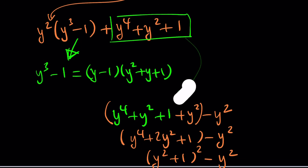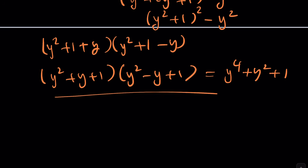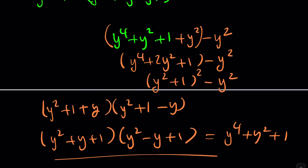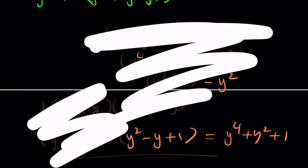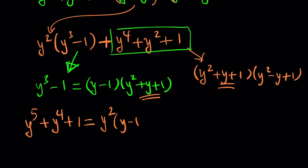So this piece can be factored into y squared plus y plus one times y squared minus y plus one. Going back to the full expression, we can write y to the fifth plus y to the fourth plus one as y squared times y cubed minus one — which is y minus one times y squared plus y plus one — plus the second piece y to the fourth plus y squared plus one, factored into y squared plus y plus one times y squared minus y plus one.